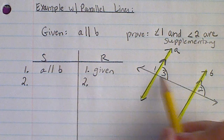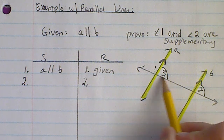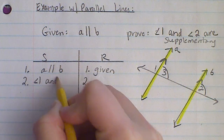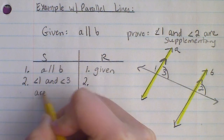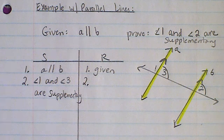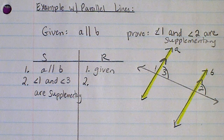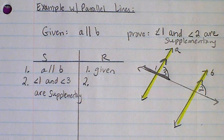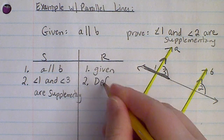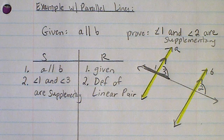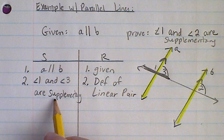The first thing I said was that I introduced angle 3 because it formed a linear pair with angle 1. So my statement is: angle 1 and angle 3 are supplementary. The reason why that is true is because we identified a linear pair, and from our chart we know that the definition of a linear pair tells us all linear pairs are supplementary. Because of this definition, I know this statement is true.